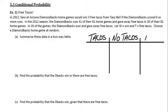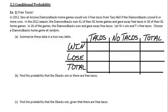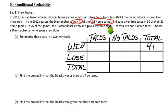So: tacos, no tacos, and we have our total column. And then win versus lose, and the total row down there. We just need to identify what numbers go where. They won 41 total games out of their 81 total home games. So total wins was 41, and then the table total should add up to 81.